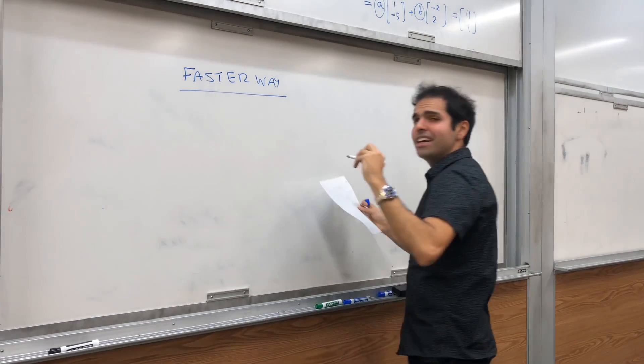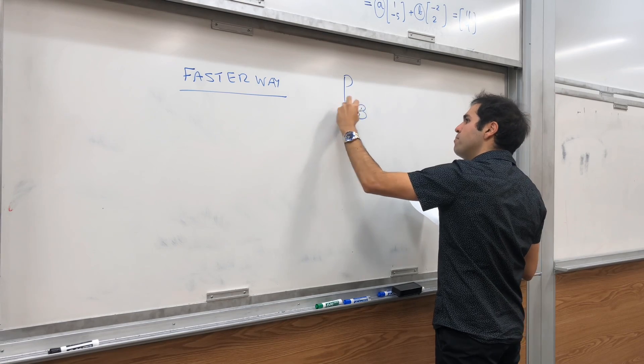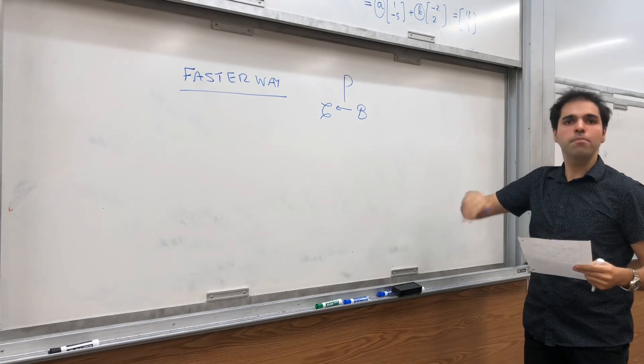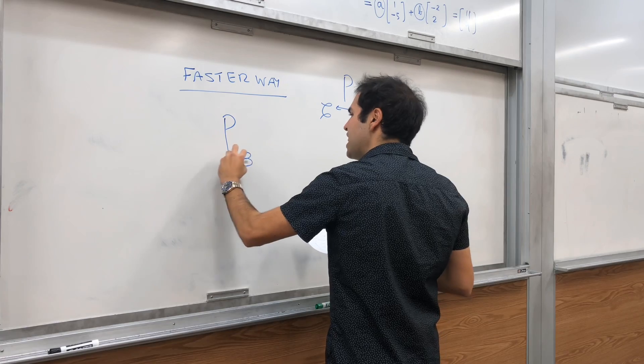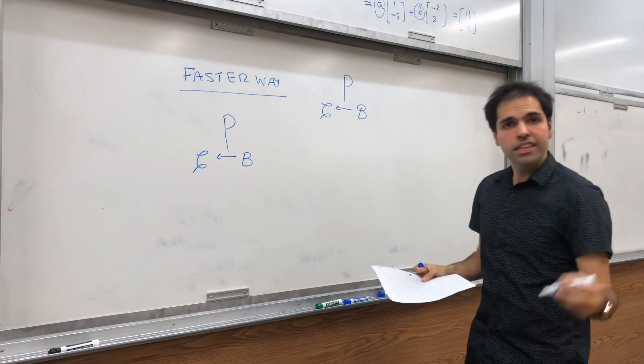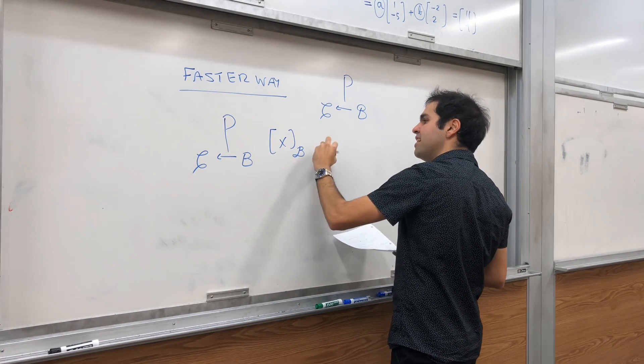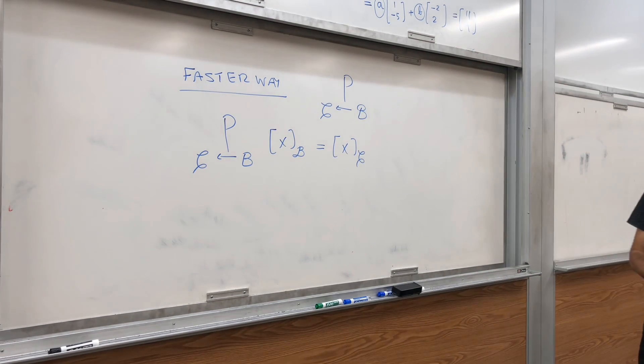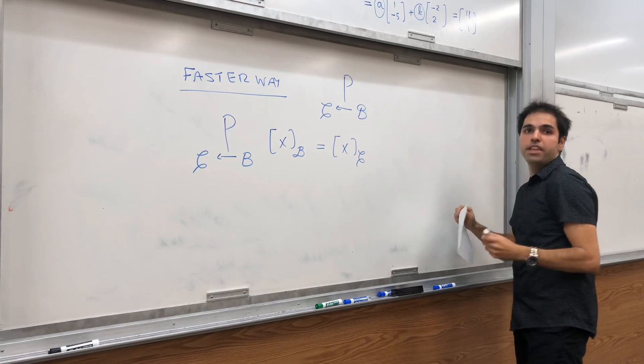Faster way. The faster way is via what's called the change of coordinates matrix, P from B to C. And there's a reason I write it this way, because what is the property of P? P, think of it as a super scanner. It takes a code as its input, so it takes XB as an input, and it spits out XC. So it's something that goes directly from a code to another code. So, think of it as like a code updater or something.